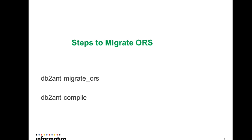For migrating ORS it will also involve two processes. One is migrate ORS and the second one is compile. Migrate ORS will migrate ORS from 9.0.1 to 9.0.2, and compile will compile all the database objects.